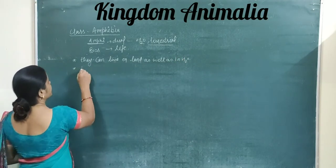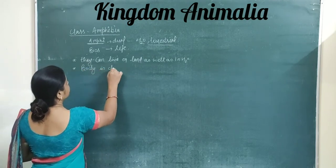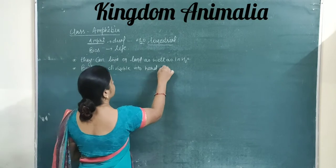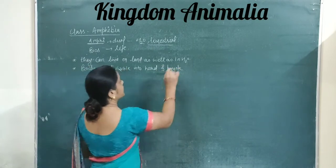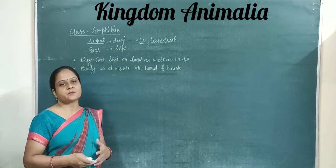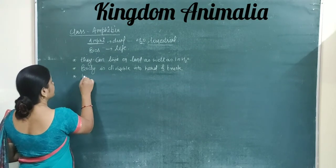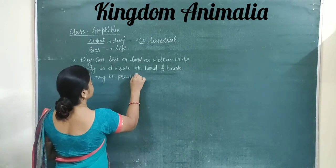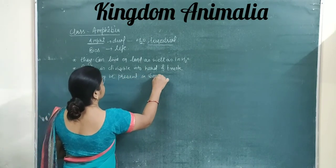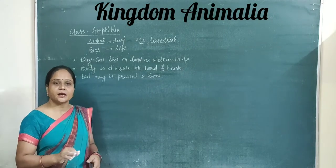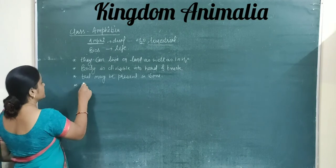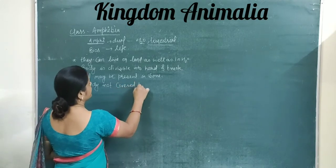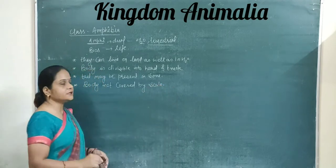The next feature of Amphibia: the body is divisible into head and trunk, but the tail is absent or may be present in some. Another feature is that the body is not covered by any type of scale — scale covering is not present.